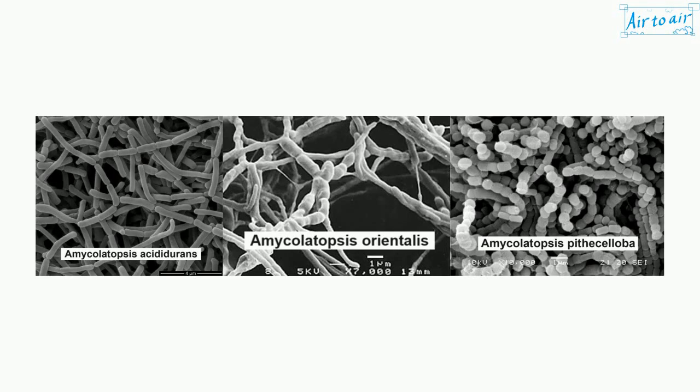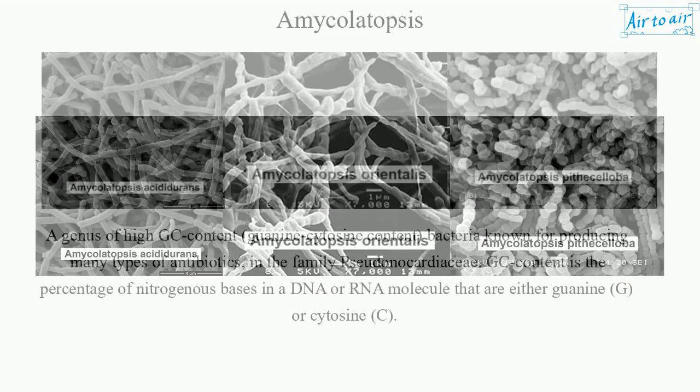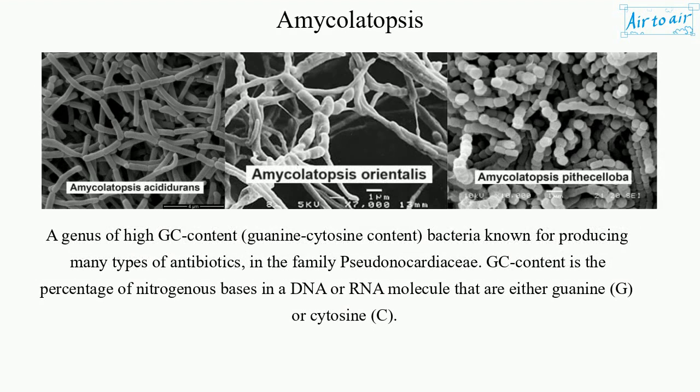Amycolatopsis is a genus of high GC content — guanine cytosine content — bacteria known for producing many types of antibiotics, in the family Pseudonocardiaceae.